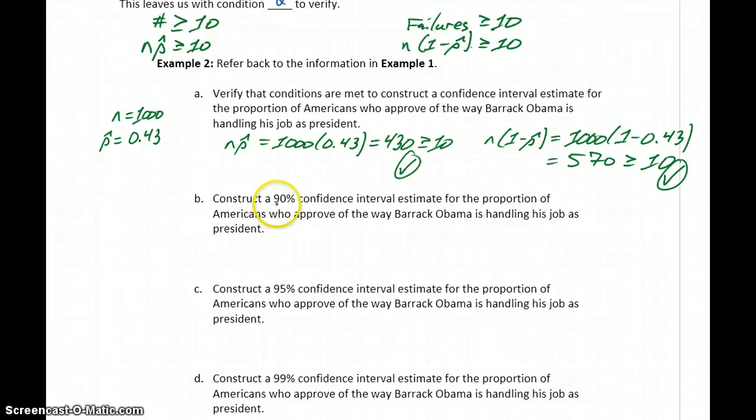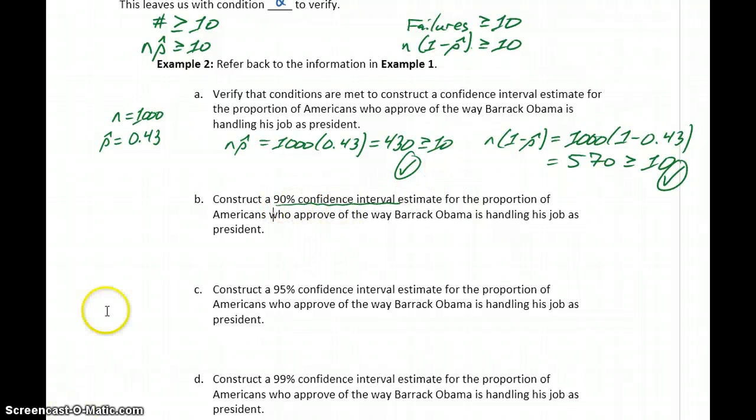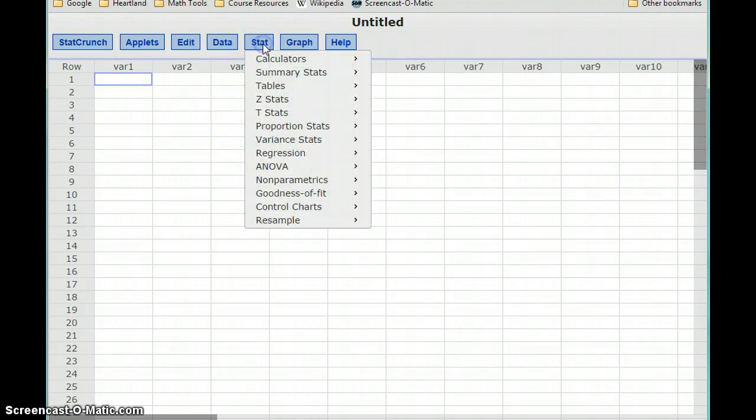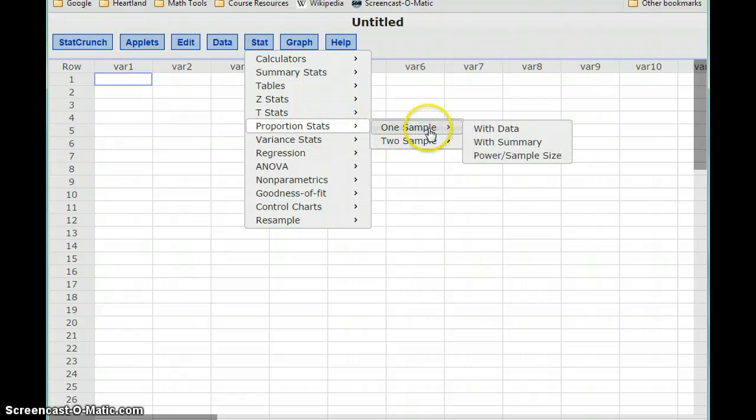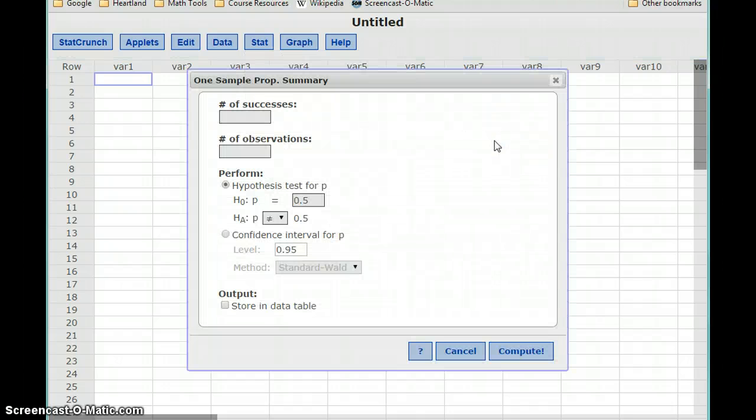Now we want to construct a 90% confidence interval for the proportion of Americans who approve of the way Barack Obama is handling his job as president. Since the conditions are met, this process will be valid. If we pull up StatCrunch and under the Stat menu go to Proportion Stats, we're dealing with one sample data and we want to select With Summary. The information we need to input are number of successes, number of observations, and we're going to set a confidence level. For our first example, we want that to be 0.9 or 90%.